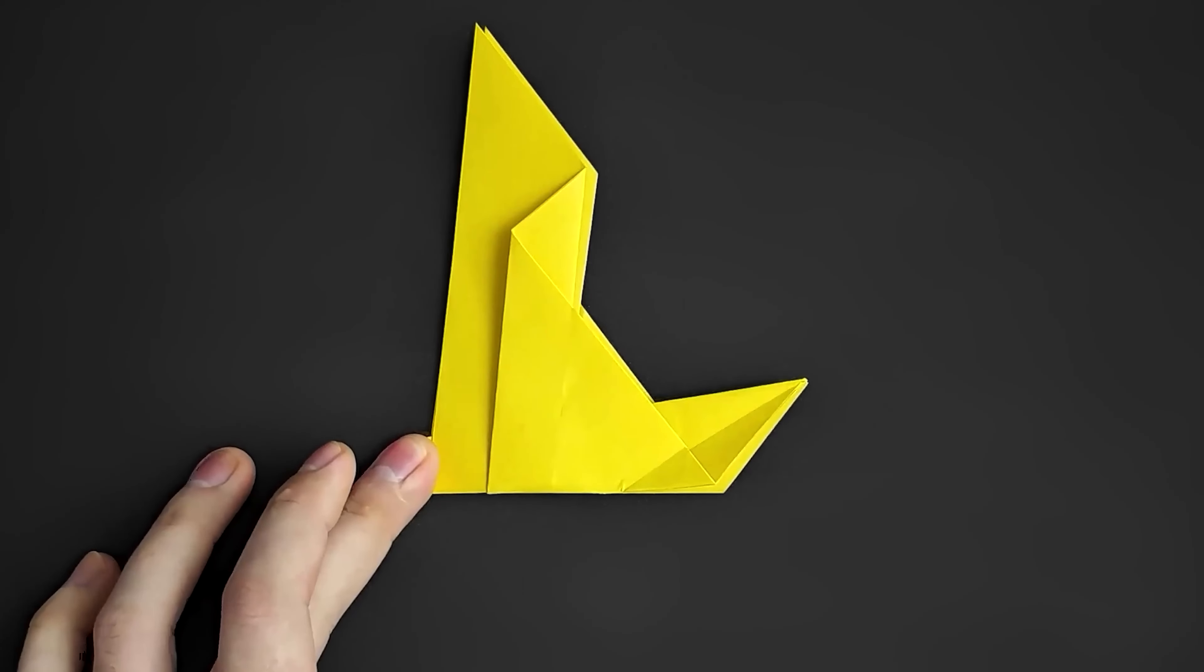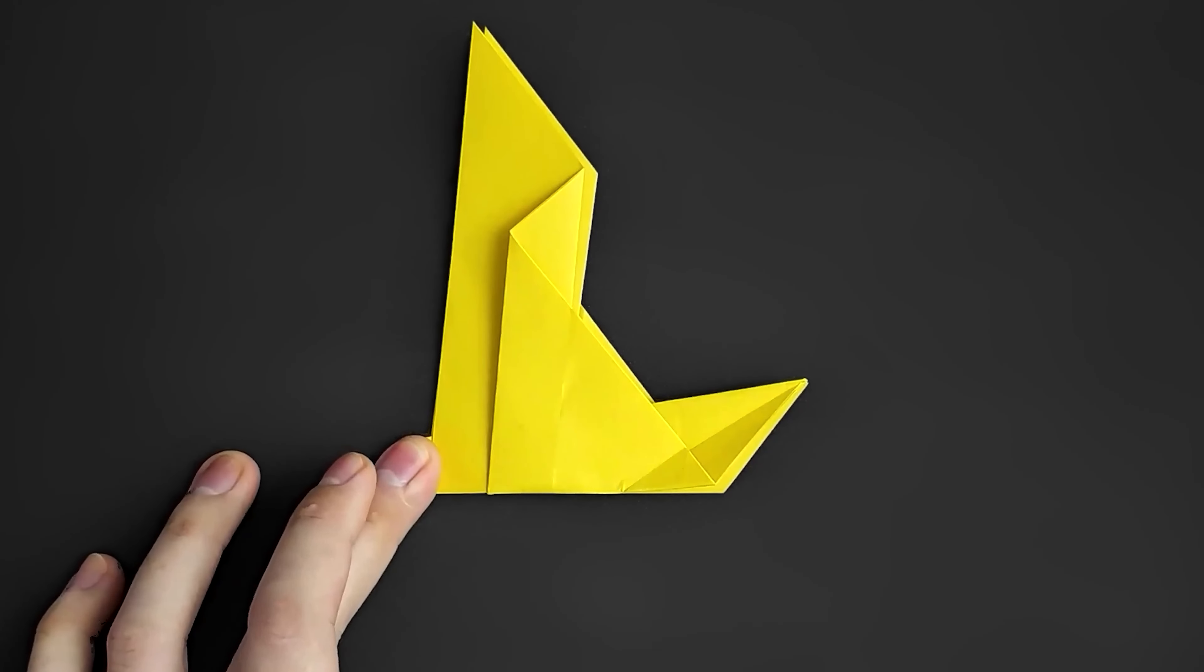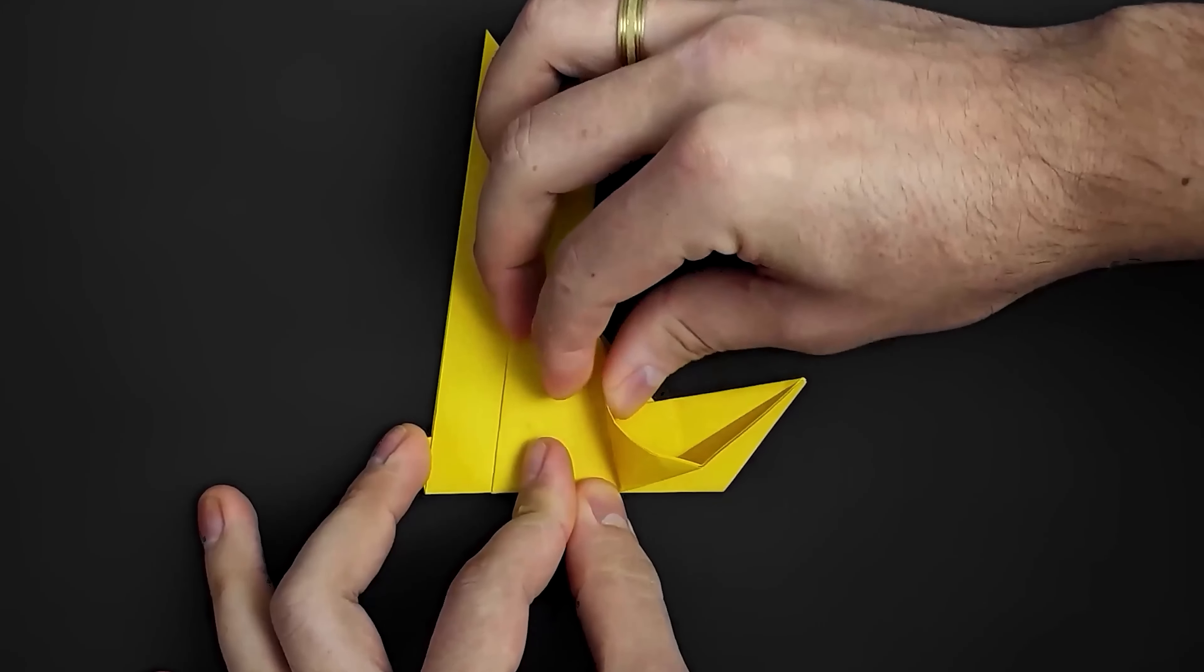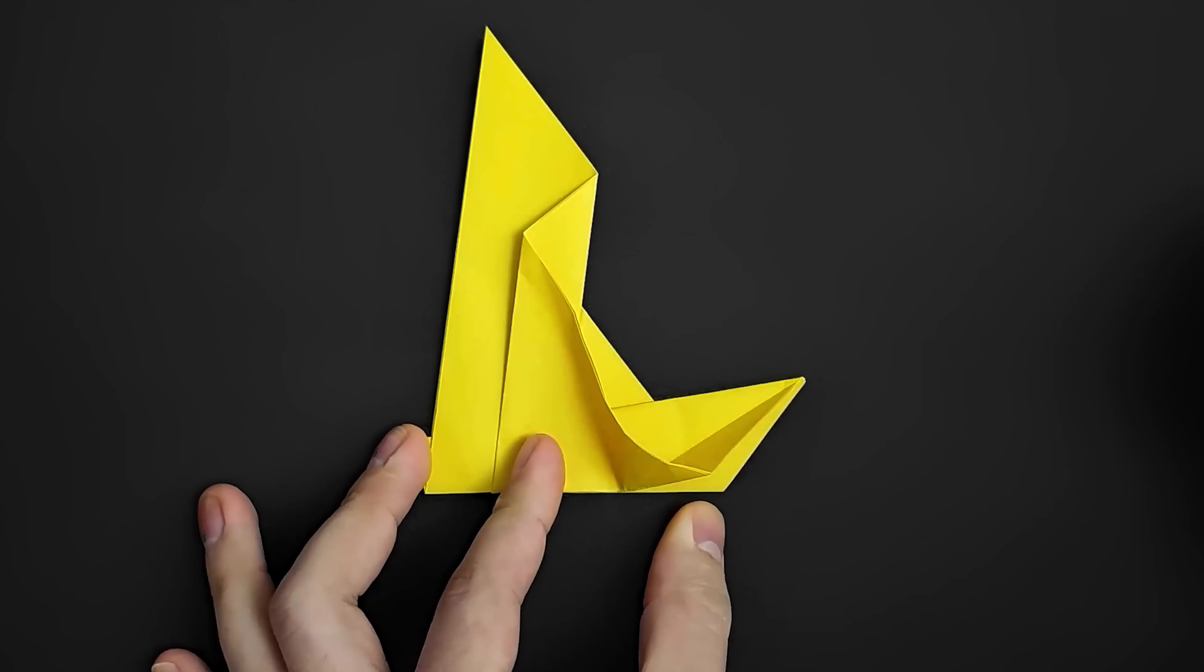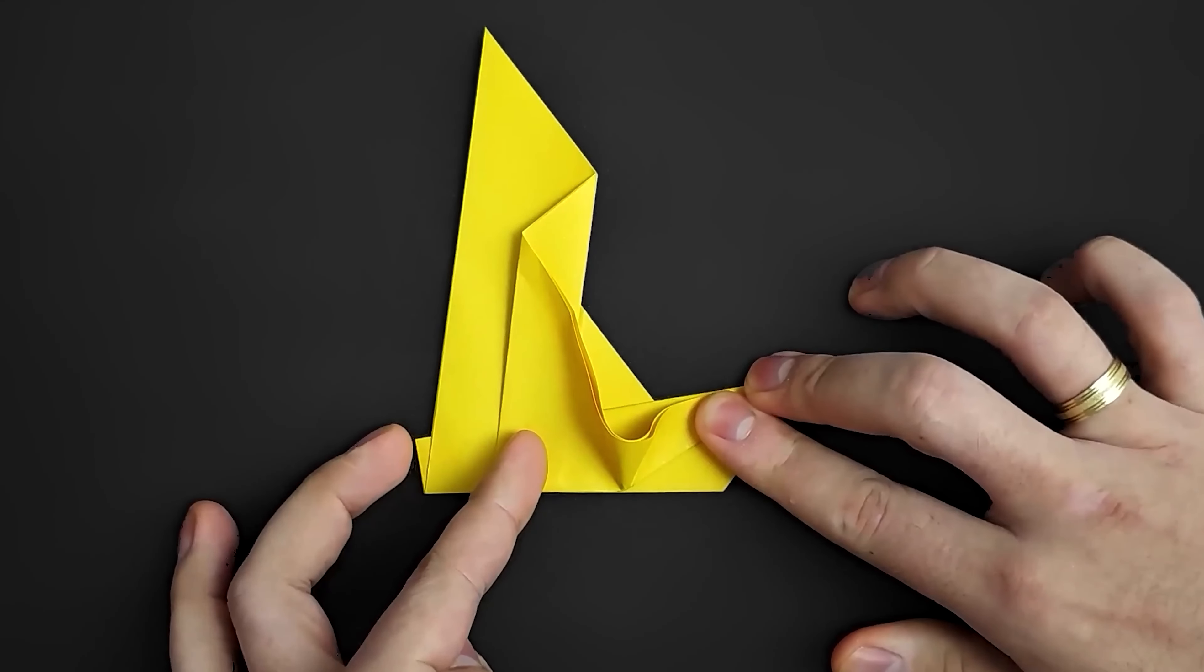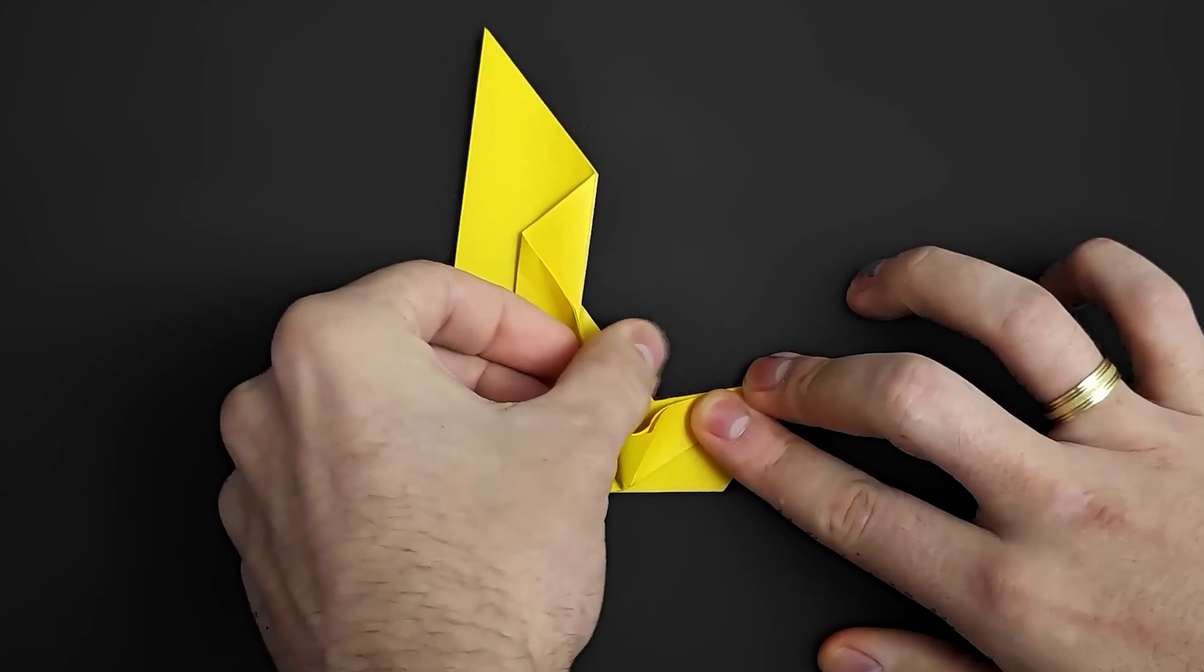Now let's fold the next layer to the left. To make it easier, just bring the paper to the left a bit like this. Then fold along the previous diagonal and now flatten the paper to the left.